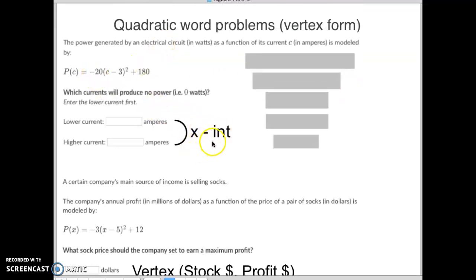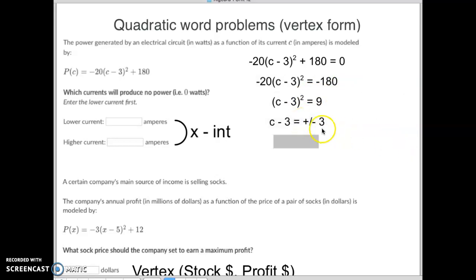When we are looking for the x-intercepts, we know that on the x-intercepts, your y-value equals zero. So we're going to take that equation they gave us, and we're going to set it equal to zero, just like we did here. And look, we've been already solving these, so you should know how to solve. We're going to subtract 180 from both sides. We're going to divide by -20 on both sides. We're going to take the square root of both sides. And remember, that equals plus or minus the square root of nine, so plus or minus three. And then we add three to both sides, and we get our two x-intercepts.